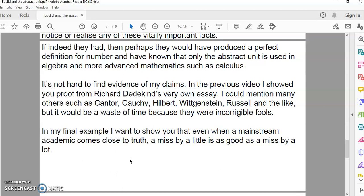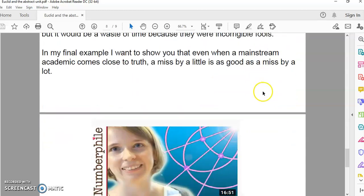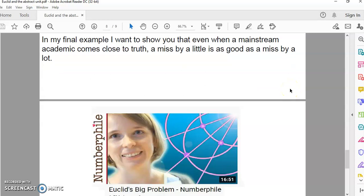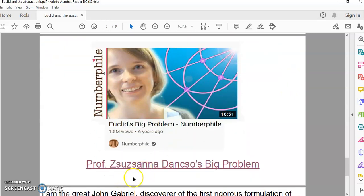In my final example, I want to show you that even when a mainstream academic comes close to truth, a miss by little is as good as a miss by a lot. There's Professor Zsuzsanna Dancso's video on Numberphile in which she discusses Euclid's big problem. Actually Euclid didn't have a problem; she had a problem because she's never understood the Elements. She does say something correct in the beginning: there is no ideal unit. But then she fails to realize that in algebra there doesn't have to be an ideal unit because algebra is the generalization of measurement in geometry, in which case we use the abstract unit.